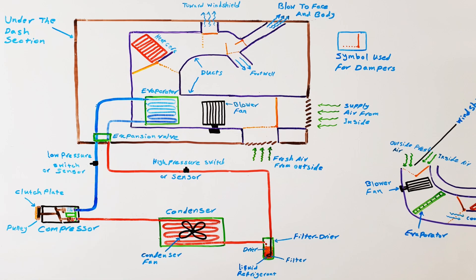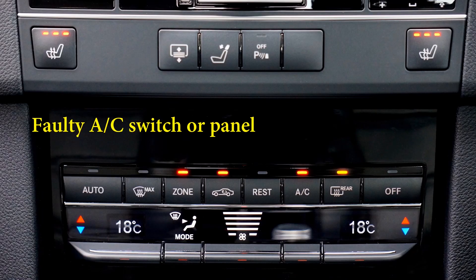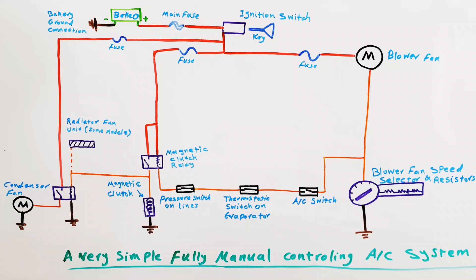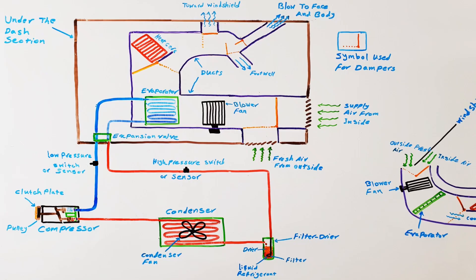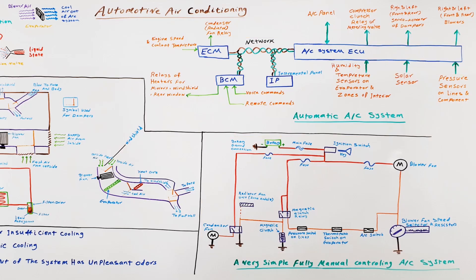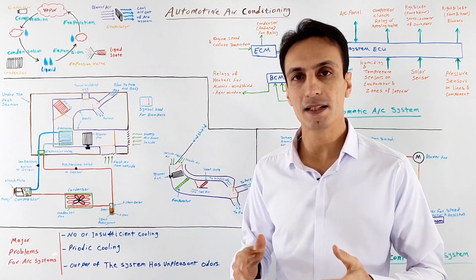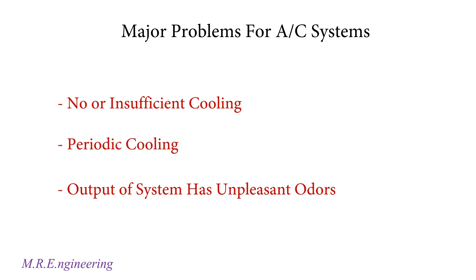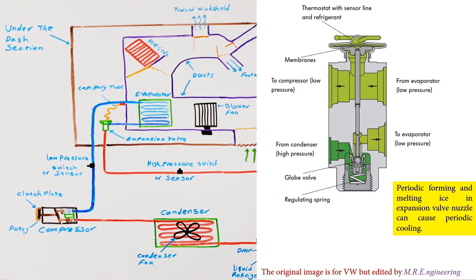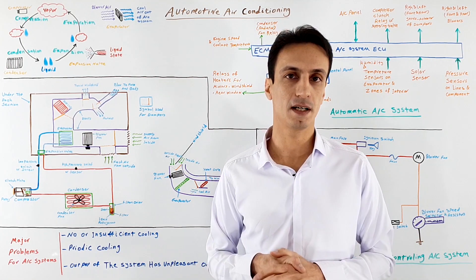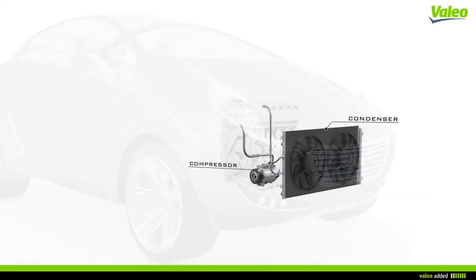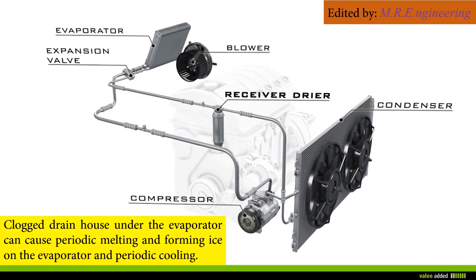The compressor not engaging or being faulty can also cause insufficient cooling, and that can have many reasons: the AC fuse is blown, the AC switch on the AC panel is faulty, evaporator temperature sensing is in trouble, refrigerant pressure sensing is faulty or over-pressure lines are sensed, the AC ECU is the culprit, the magnetic clutch needs to be changed, the wire harness and electrical circuit are not sound, or even the drive belt can be missing. The next problem with AC systems is periodic cooling, which can be caused by excessive moisture in the system, ending up forming ice in the expansion valve.